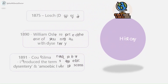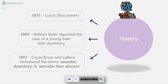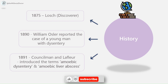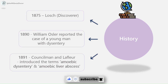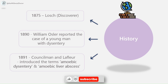Entamoeba histolytica is the parasite causing dysentery and liver abscess in man. It was discovered by Loesch in 1875, who demonstrated the parasite in the dysentery feces of a patient in St. Petersburg, Russia. In 1890, William Osler reported a case of a young man with dysentery who later died of liver abscess. Councilman and Loffler in 1891 established the pathogenesis of intestinal and hepatic amoebiasis and introduced the terms amoebic dysentery and amoebic liver abscess.